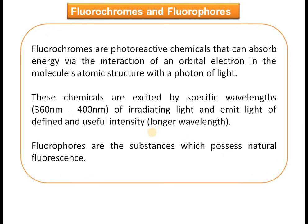Fluorochromes are photoreactive chemicals that can absorb energy via the interaction of an orbital electron in the molecule's atomic structure with a photon of light. Within their molecular structure, the electron shifts from one orbit to the next higher orbit, then returns to its ground orbit and emits energy in the form of light, producing the image.